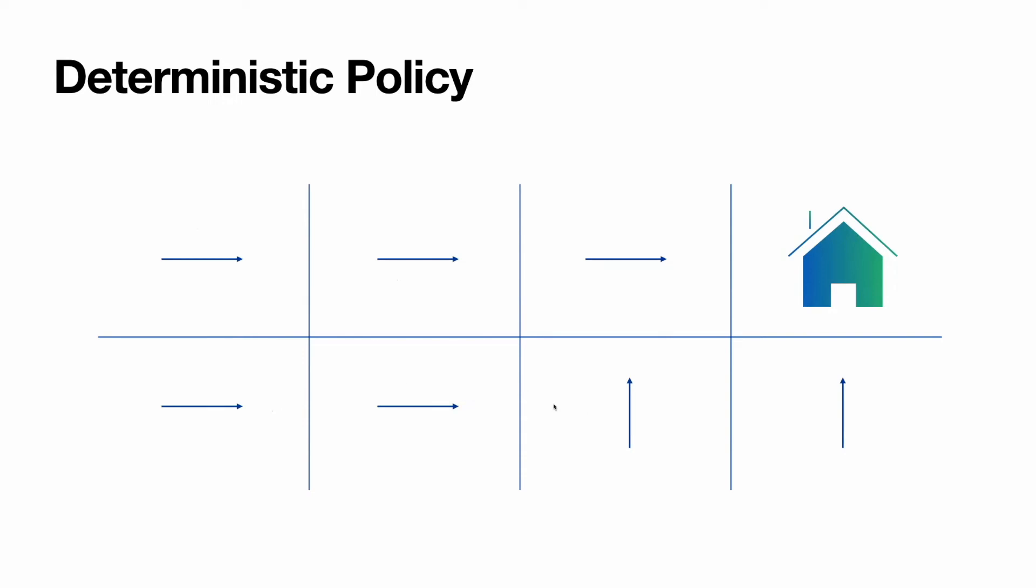Here already you can see optimal policy. If we appear here, go right, go up, go right. If we appeared here, go right three times. If we appeared here, go up. If we appeared here, go right, go right, go up, go right. Deterministic policy. One state, one action.